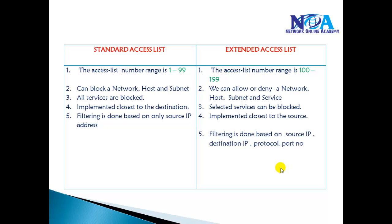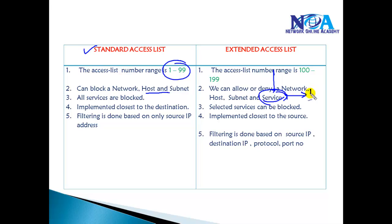In this section we'll talk about extended ACLs. Going back to basics, standard ACLs range between 1 to 99 and can allow or deny a specific host, network, or any subject. In case of extended ACLs, we can allow or deny specific services like HTTP or FTP traffic. Filtering can be done based on source IP, destination IP, protocol, and port number — advanced filtering options that standard ACLs do not provide.